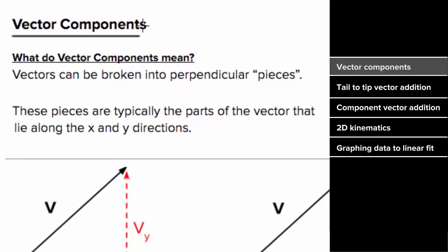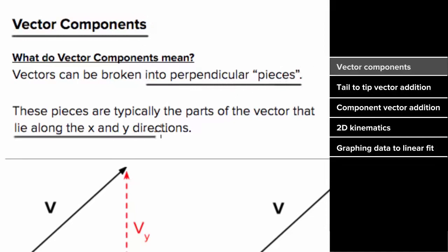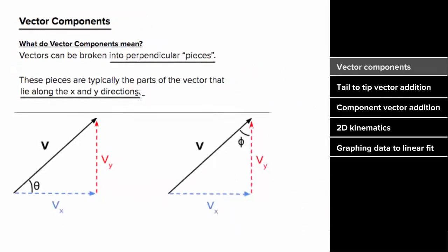What do vector components mean? Vector components are a way of breaking any vector into two perpendicular pieces. For convenience, we typically choose these pieces to lie along the x and y directions.